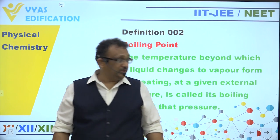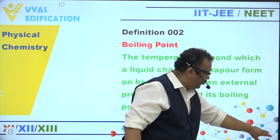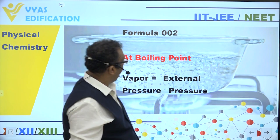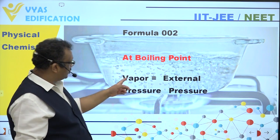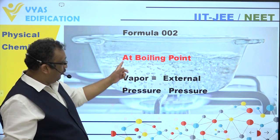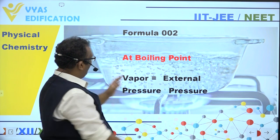Ek shabd hota hai jisko hum Normal Boiling Point kehte hain. Pehle isko dekhiye — chai ubal rahi hai, aag pe rakhi hui hai, boiling point pe hai. Ek bahut dilchasp equation hai.